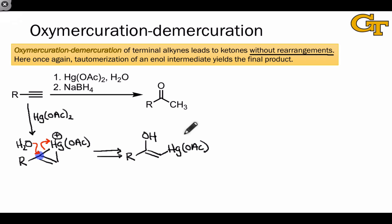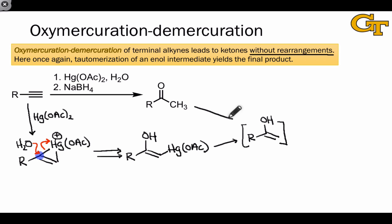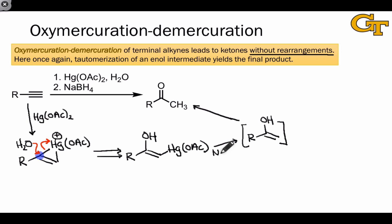The order of events here isn't 100% clear, but either demercuration occurs leading to a free enol intermediate which tautomerizes to give the ketone product, or tautomerization occurs before demercuration leading to the same result. The order of events isn't terribly important, so I'll just draw it with demercuration with sodium borohydride occurring before the tautomerization step.